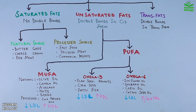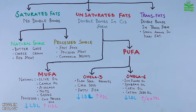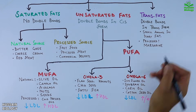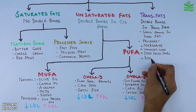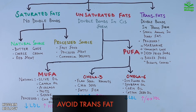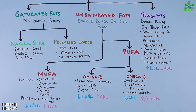Finally, we have trans fats. These have double bonds in the trans form. Small amounts are naturally found in dairy fat, but the dangerous ones come from processed sources like margarine, vanaspati ghee, and deep-fried foods. These are the worst fats for health because they increase LDL and lower HDL.